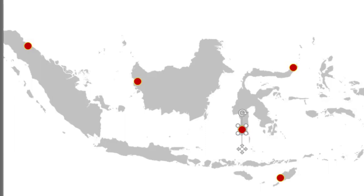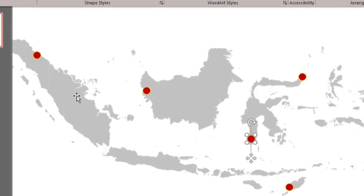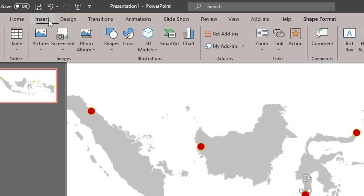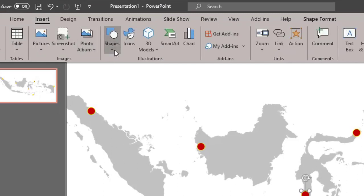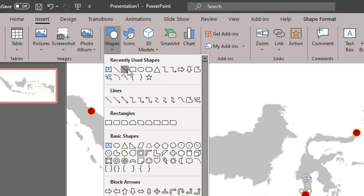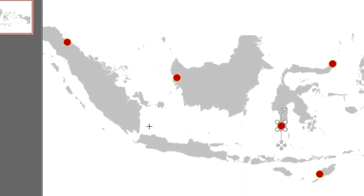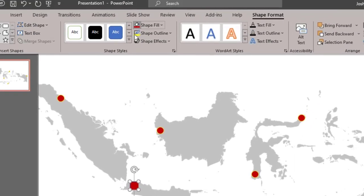Untuk kota Jakarta, karena ibu kota negara, jadi bentuknya segi empat. Kita pilih Insert, kita pilih Shapes, kita pilih Rectangle, kita gambarkan di sini, kita beri warna merah dan garis tepinya warna kuning.